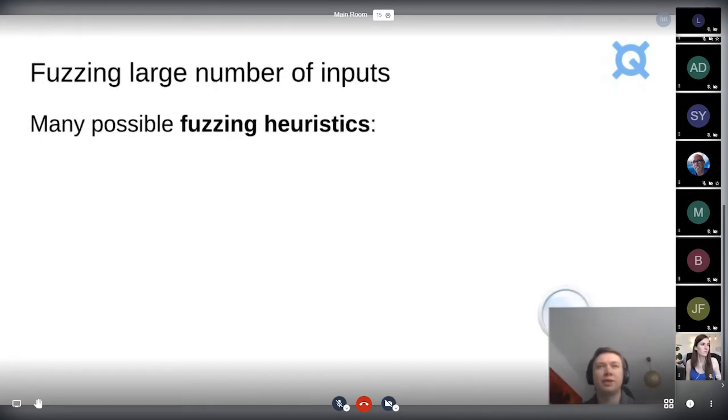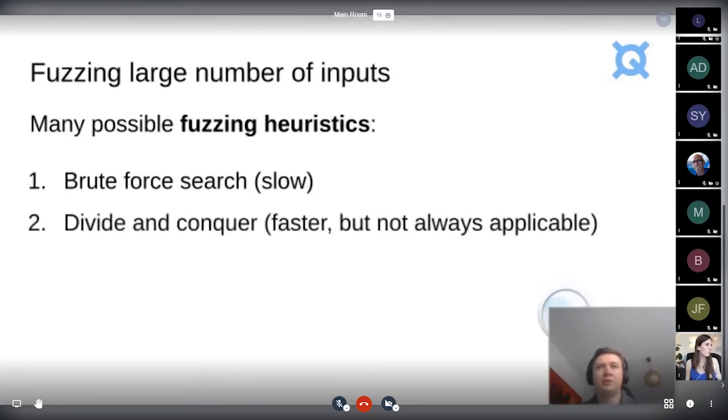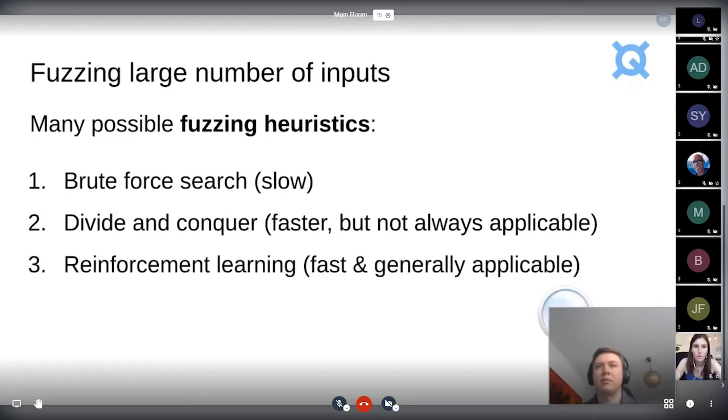There's several possible fuzzing heuristics. For instance, you can brute force every possible input, and that's very slow. You can do a divide and conquer approach, which is faster, but it's not always applicable. If you don't have certain rules like integer intervals and so on that you can easily divide into partitions. We're basically for our approach using reinforcement learning, which is also fast and is more generally applicable. And we'll see in a second why. There's also possible other heuristics, not saying this is the best one, but this is the one we chose for our project.